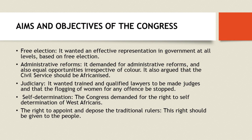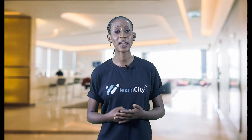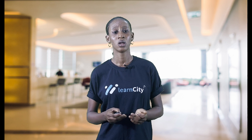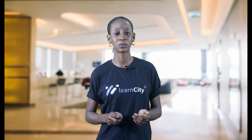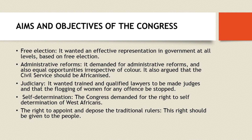Another aim of the National Congress of British West Africa was self-determination. The Congress demanded the right of the people to determine what form or system of government best suits them — the right to self-determination for West Africans. They also wanted the right to appoint and dispose of traditional rulers to be vested in traditional organizations and not the colonial masters.